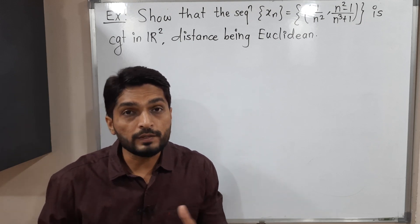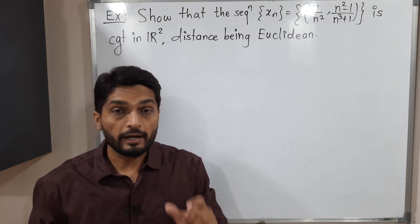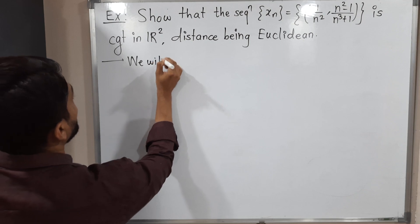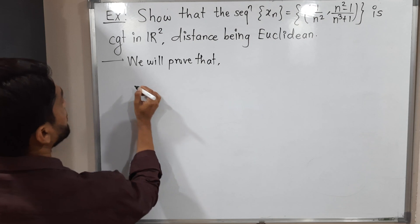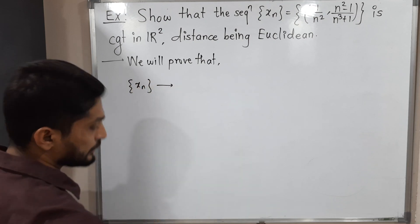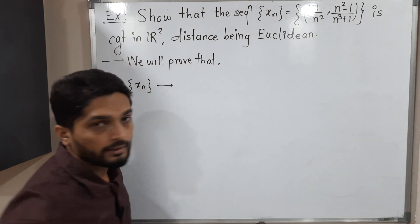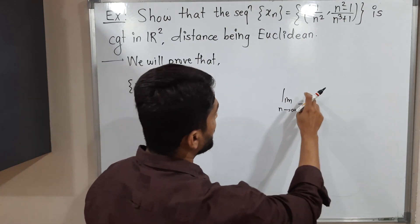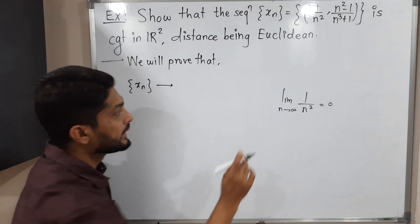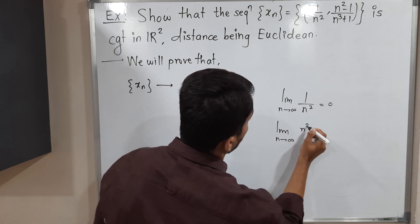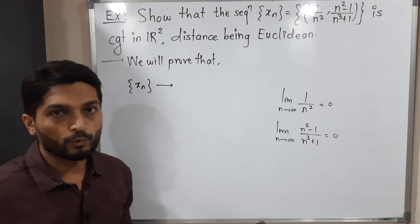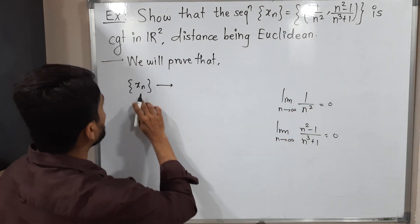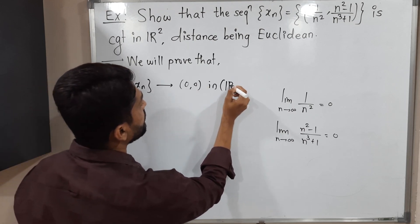When we want to prove it is convergent, we have to prove it converges to some point. Let us decide to which point this sequence is convergent. We will prove that sequence Xn converges to some limit. You can easily see there are two components — the first component is 1/n², and the second component. Applying the limit as n tends to infinity, 1 over infinity is 0, so the first component converges to 0. Similarly, by applying the limit to the second component, it also converges to 0. Therefore, the second component also converges to 0, and we will prove the sequence Xn converges to (0, 0) in R² with Euclidean distance D.